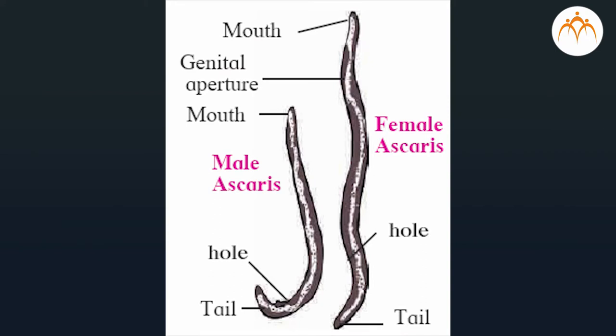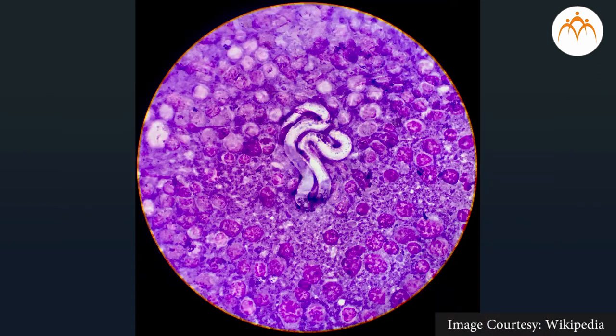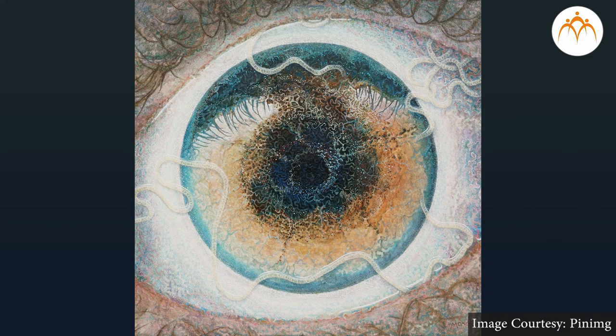Phylum Aschelminthes: the body of these animals is long, thread-like, or cylindrical; hence they are called roundworms. These animals are either free-living or endoparasites. Free-living animals are either aquatic or terrestrial. The body is triploblastic and pseudocoelomate, non-segmented, and covered with a tough cuticle. These animals are unisexual. Examples: Ascaris (intestinal worm), filarial worm (elephantiasis worm), Loa loa (eye worm), etc. Find out how roundworms like intestinal worms, elephantiasis worms, and plant worms infect their hosts, what precautions to take, and what remedies to use if infected.